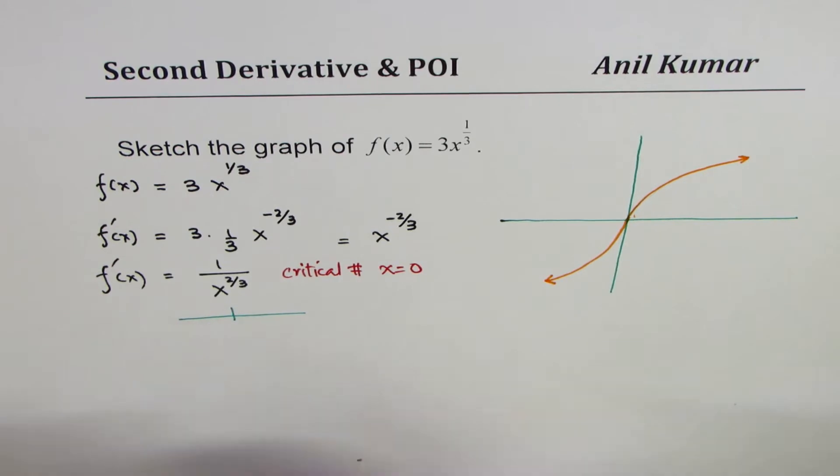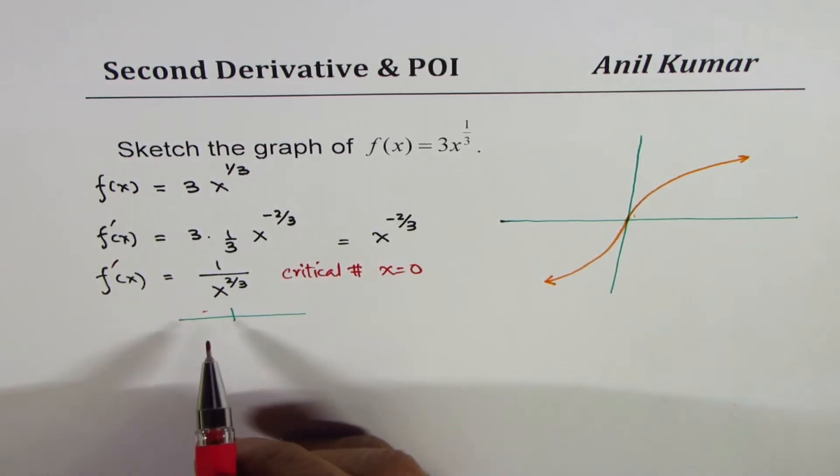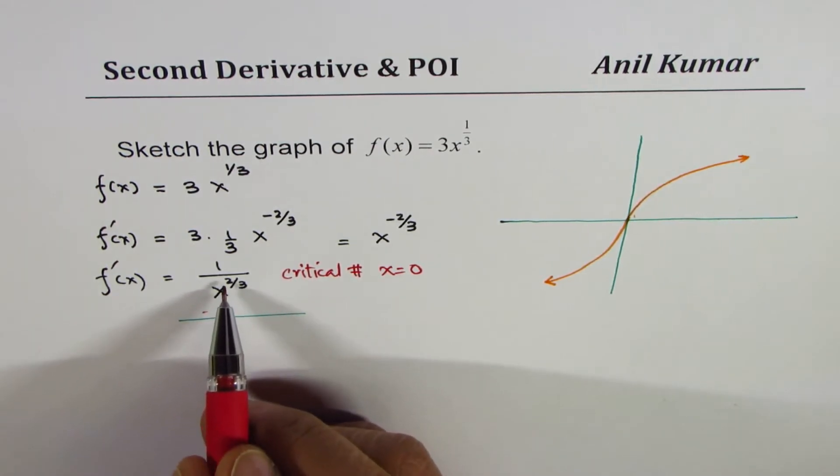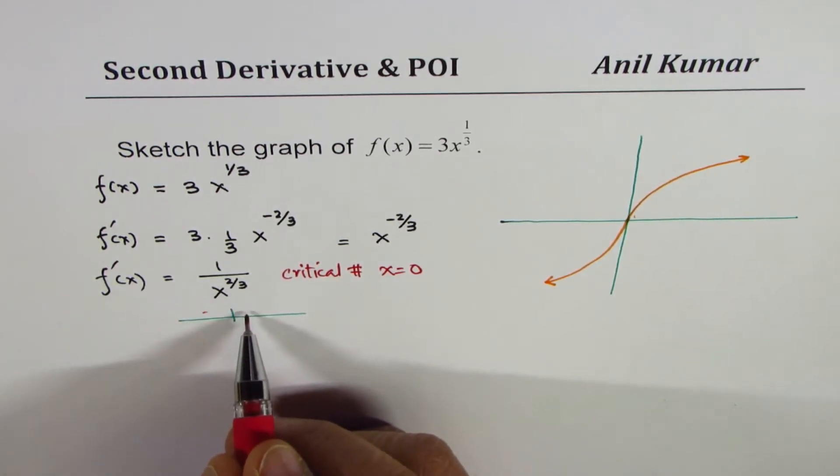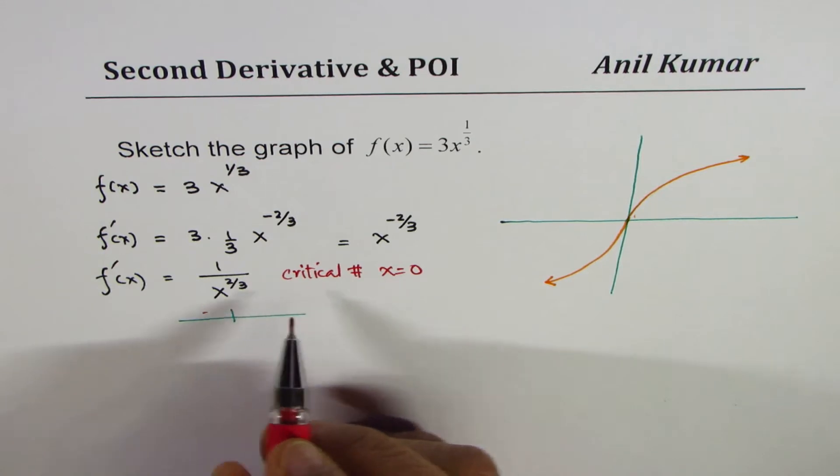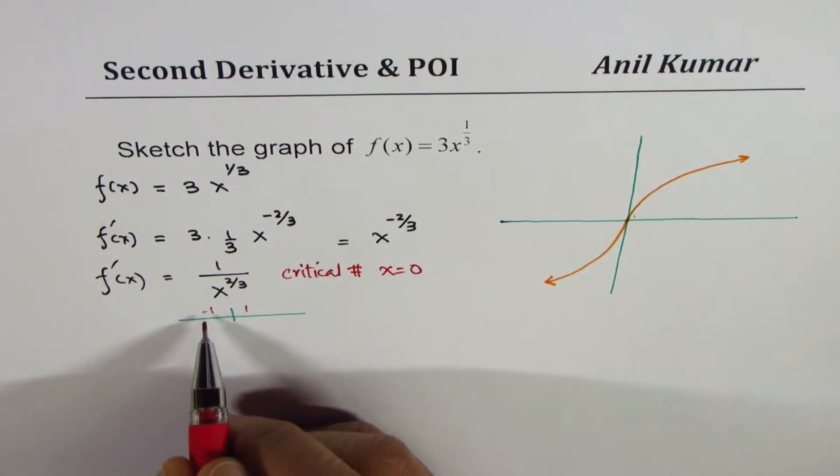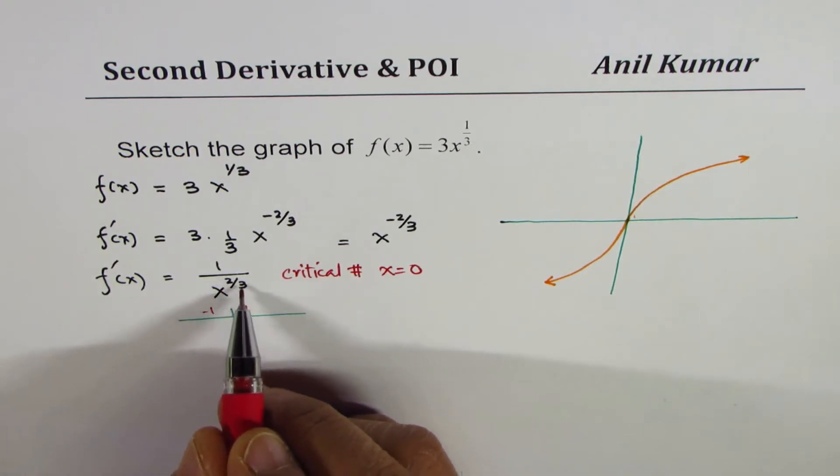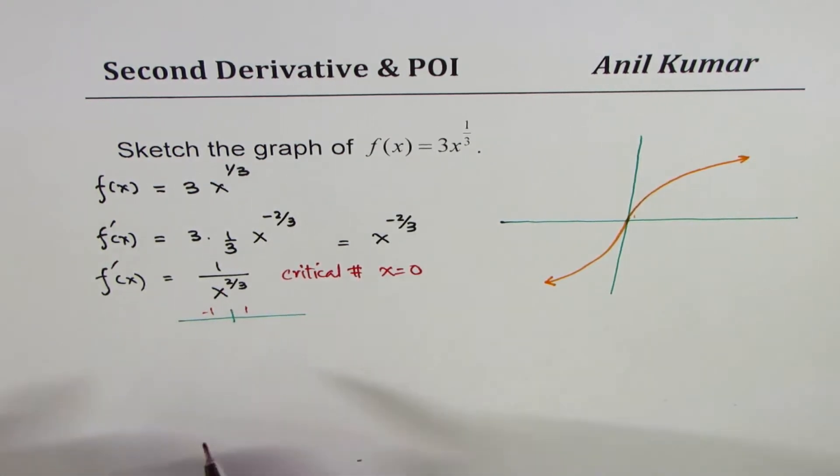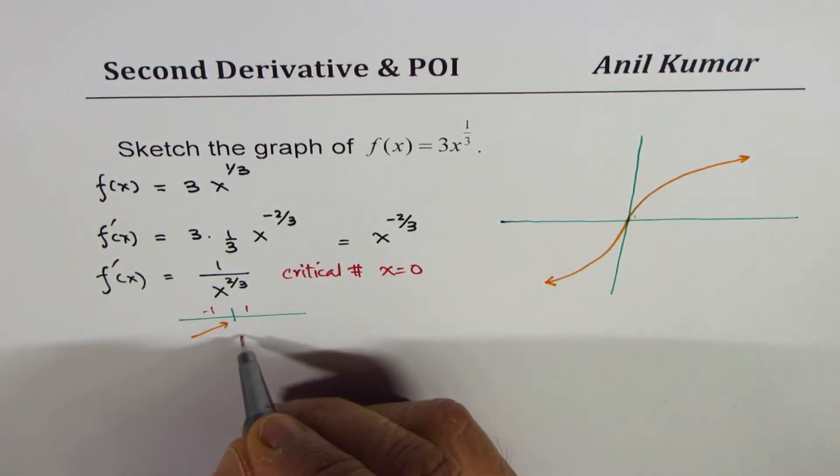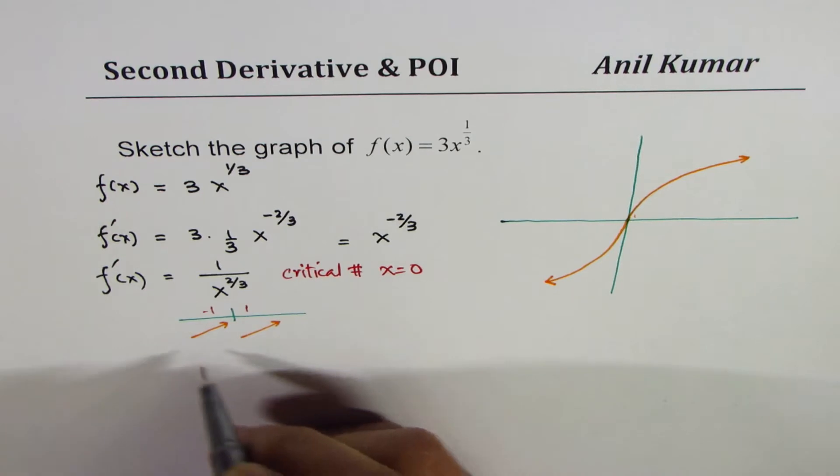At x equals to 0, if you analyze, if you take a test point on the left side, for example, what do you notice? Since it is x square and then cube root, it is always positive, whether you take it on the left side or on the right side. So if I take value of minus 1 or if I take value of plus 1, so minus 1 to the power of 2 over 3 will be plus 1. So what you notice here is that the graph of the function is increasing.